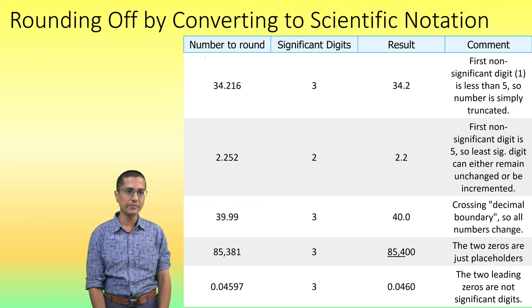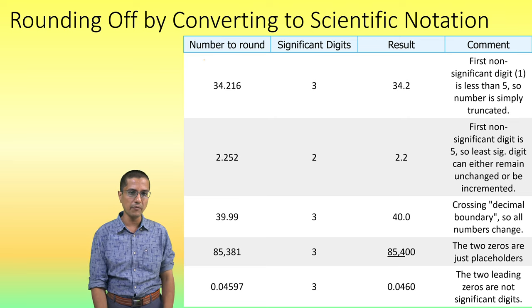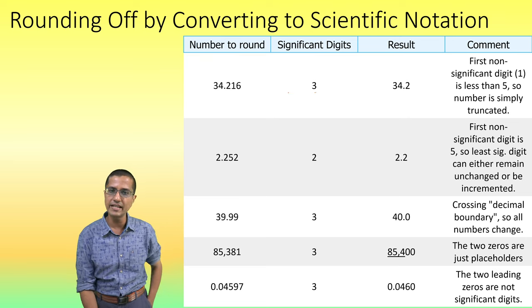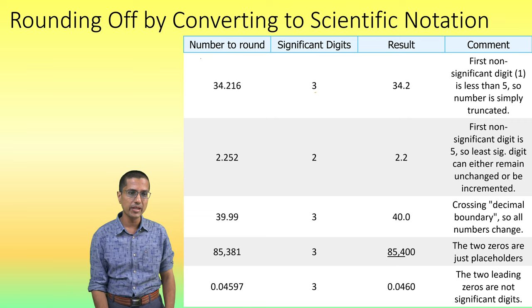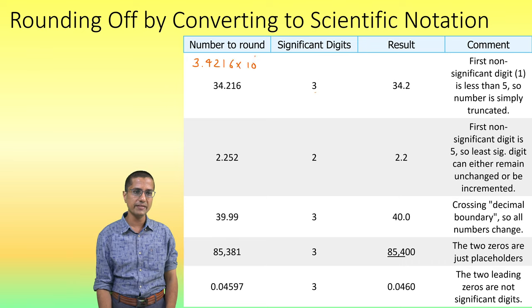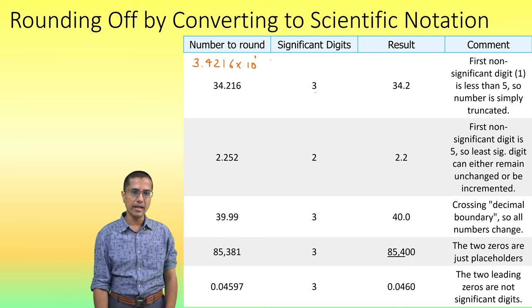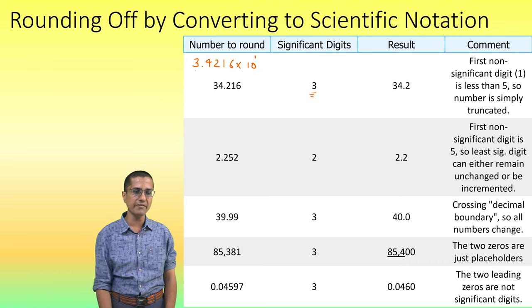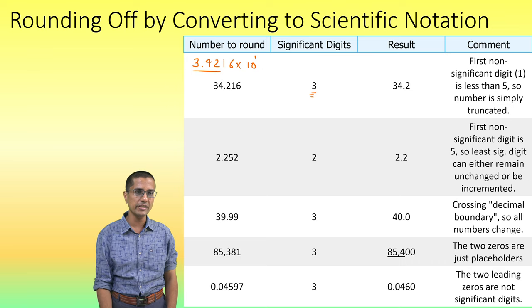These are several numbers and we are going to round them up one by one to the number of significant digits that have been specified in the second column. So the first number, we will first convert it into scientific notation and it comes like this. And then we proceed with the rounding. So we want only three significant figures here. We want only these three.